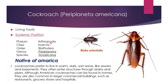Cockroaches generally रहते हैं warm, dark, damp places में — जहाँ अंधेरा हो, जहाँ नमी हो, moisture हो। They often enter through drains and pipes — kitchen pipes और washroom के pipes में generally पाए जाते हैं। Although American cockroaches can be found in homes, they are also common in large commercial buildings such as restaurants, grocery stores, and hospitals.